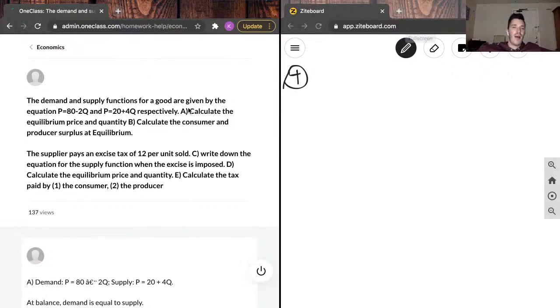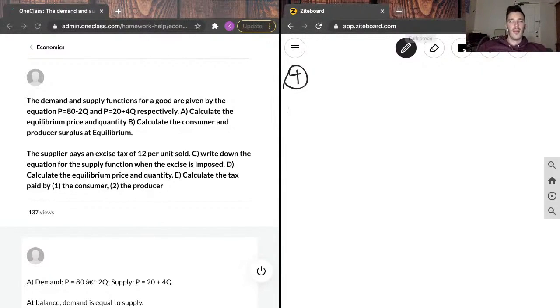Calculate the tax paid by 1, the consumer, and 2, the producer. I may not do this entire question. I might just do the first bit of it. We'll see how long it takes. So, Part A. Calculate the equilibrium price and quantity.